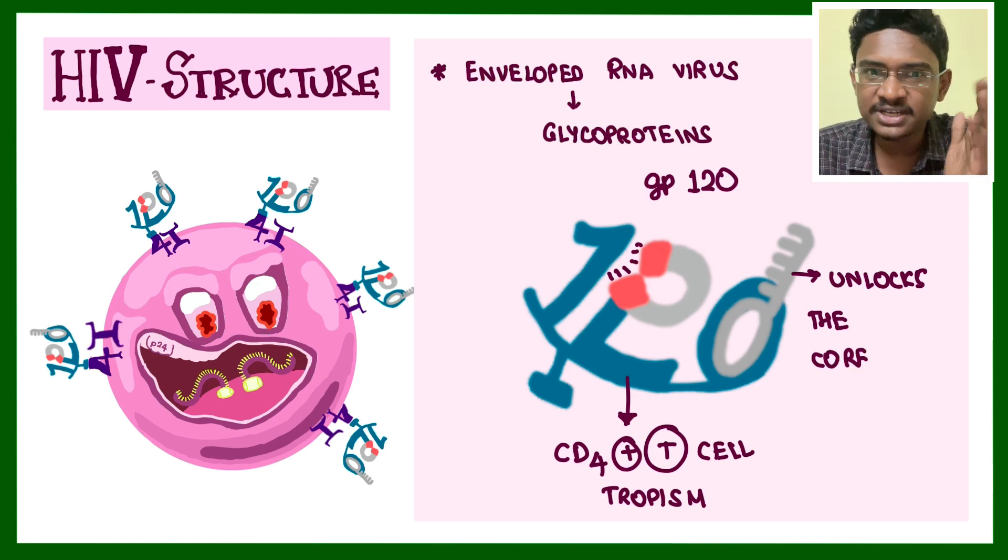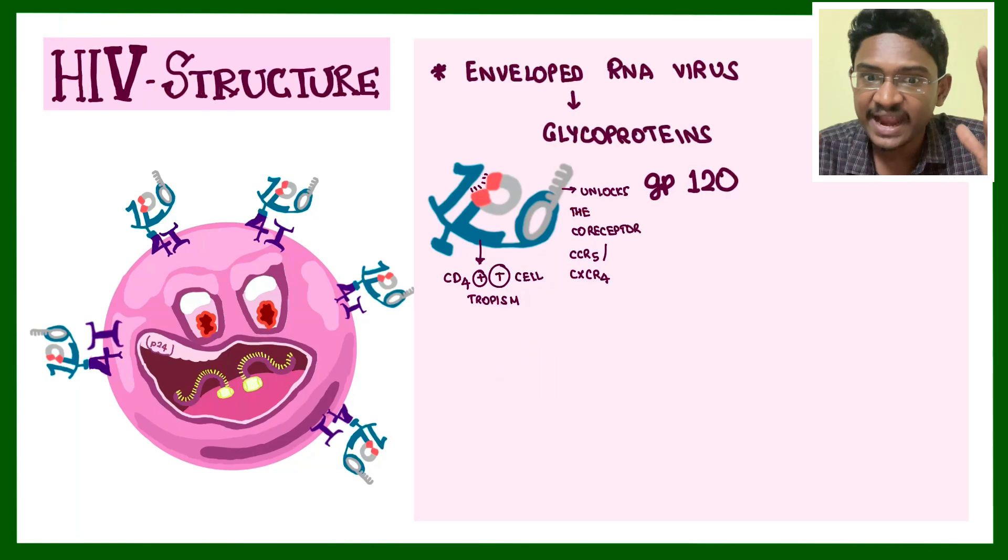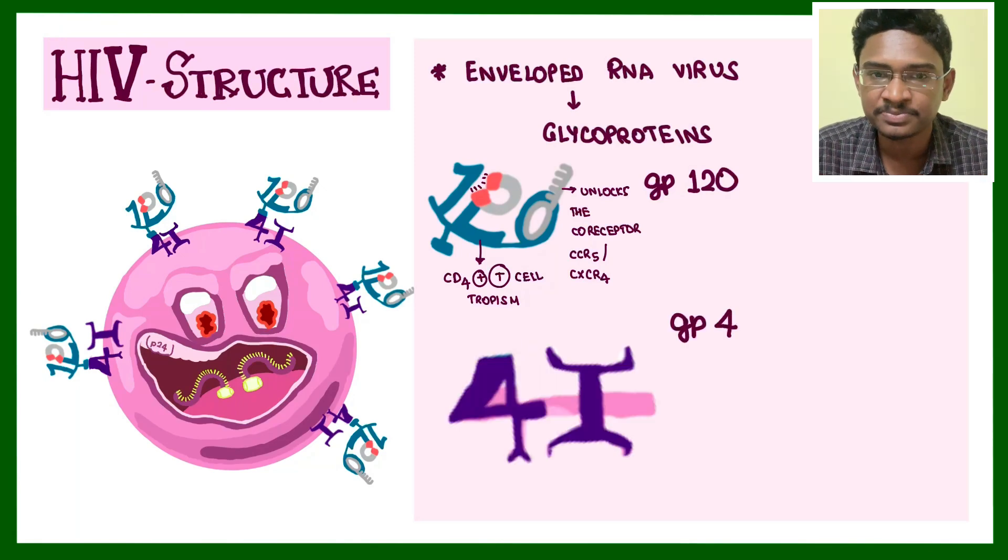Not only is this interaction needed but also co-receptors are needed so that the key unlocks and HIV can infect our lymphocytes. The co-receptors on the T cells are CCR5 and CXCR4. These receptors pave the way for HIV to enter our cells. This is why we monitor CD4 count in HIV, because this has tropism towards infecting T lymphocytes.